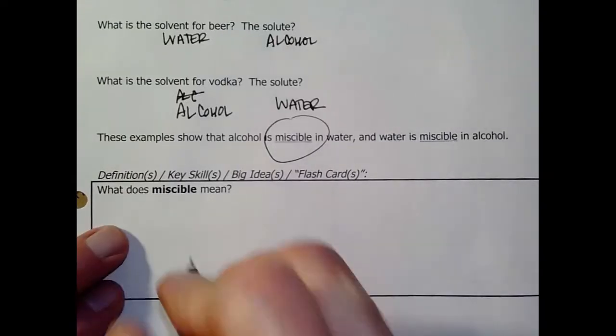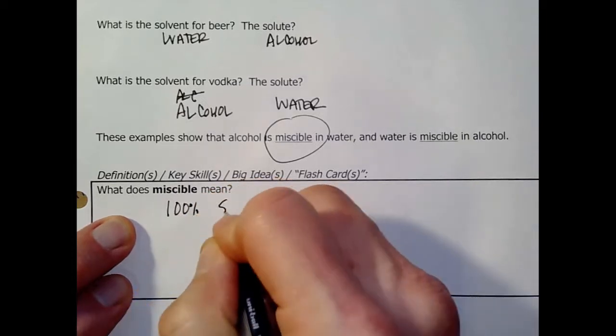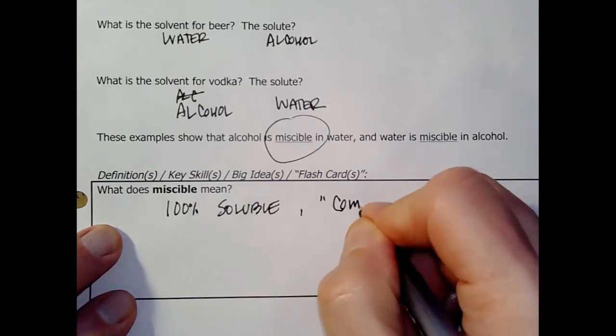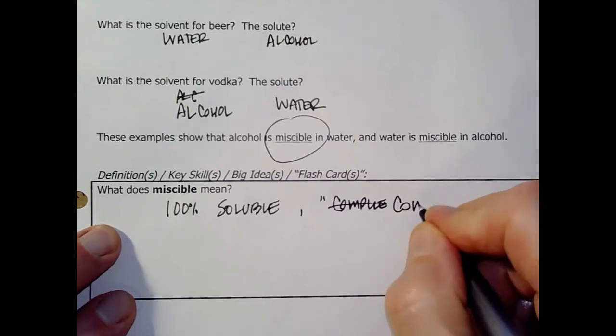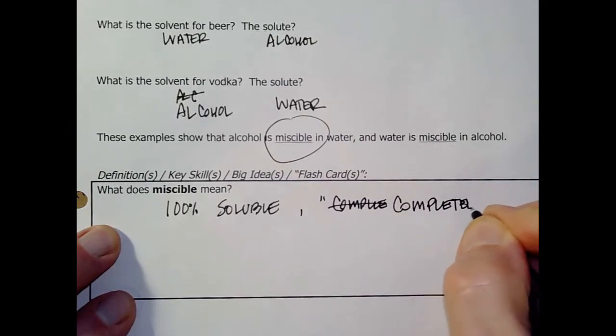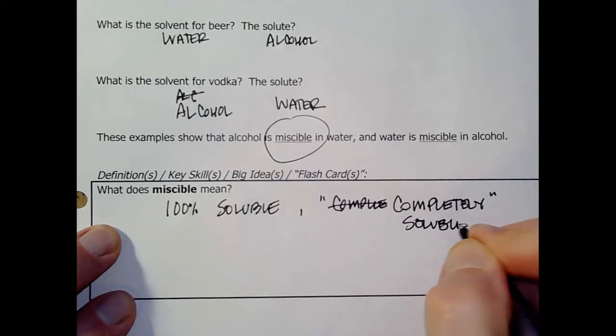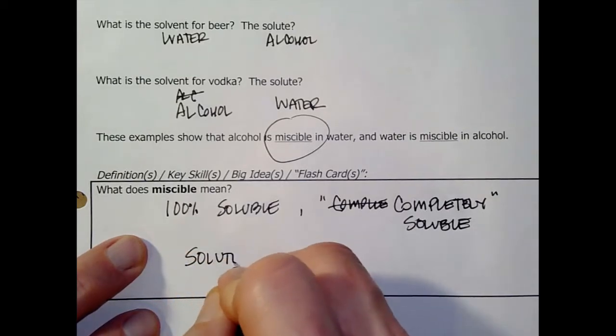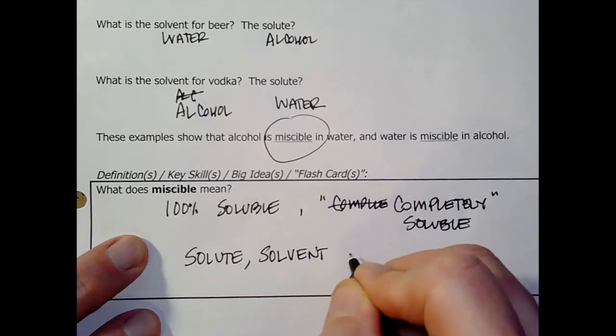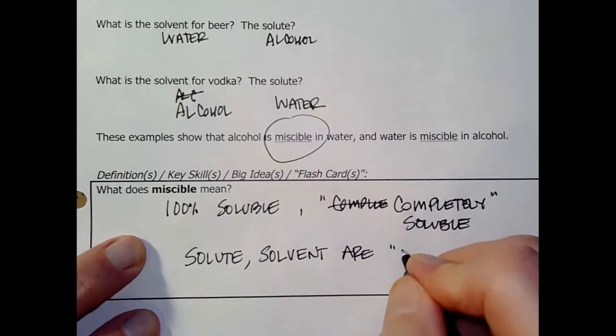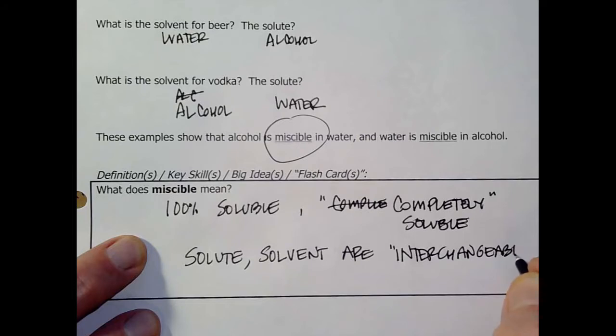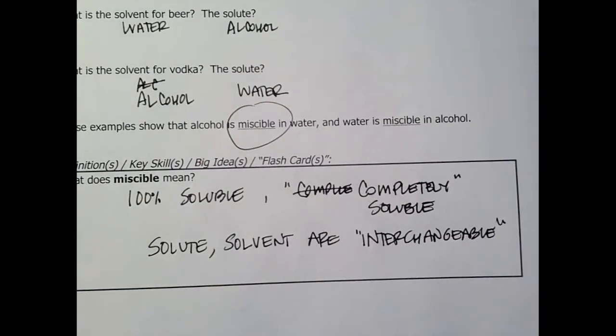We say that the term we usually use is miscible. What it means is this. It's two liquids that are 100% soluble, sort of in each other. Maybe we'll say completely soluble. Another way to think about it is the solute and the solvent are completely interchangeable. You can put more of one or more of the other. So we'll say solute, solvent, are interchangeable.